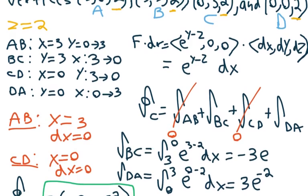Then if we look at what we found for AB, BC, CD, and DA, we could realize that for AB and CD, their x values are constant, which means that the dx values are going to be equal to 0.